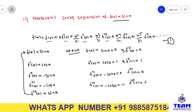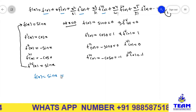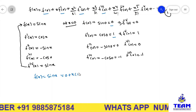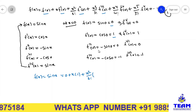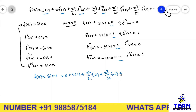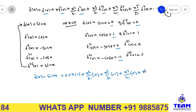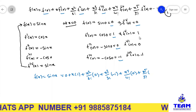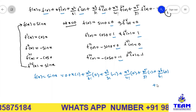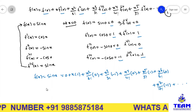Now substituting all values: sin(x) = f(0) + x·f'(0) + x²/2!·f''(0) + x³/3!·f'''(0) + ... = 0 + x·1 + x²/2!·0 + x³/3!·(-1) + x⁴/4!·0 + x⁵/5!·1 + x⁶/6!·0 + x⁷/7!·(-1) + ...